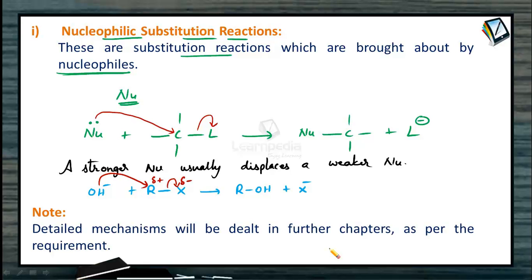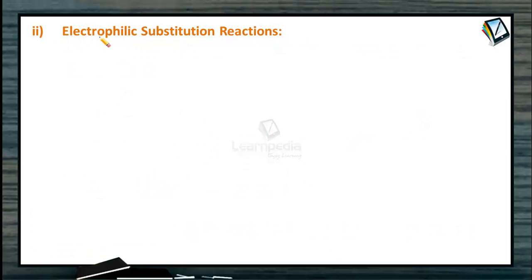In most books, these mechanisms appear both here and in their respective chapters, but to make things easier, detailed mechanisms are not discussed here — only the meaning of the various types of organic reactions. Let us now move to the next type: electrophilic substitution reactions.